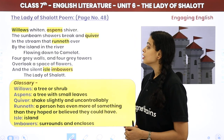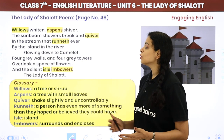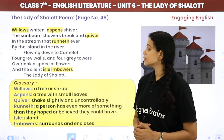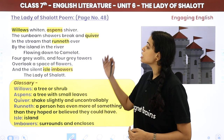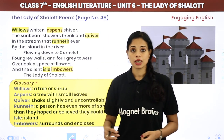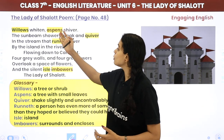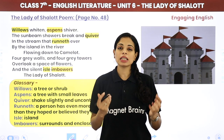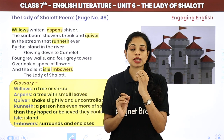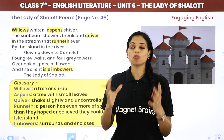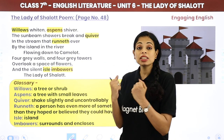Next stanza: 'Willows whiten, aspens shiver. The sunbeam showers break and quiver in the stream that runneth ever by the island in the river, flowing down to Camelot.' Willows are trees that have turned white — this happens because of the intense cold, just as our faces turn pale and our lips turn blue in extreme cold. Aspens are big trees with small leaves that shiver because of the cold. The sunbeams falling on the flowing stream below seem to break and quiver — quiver means to shake slightly and uncontrollably.